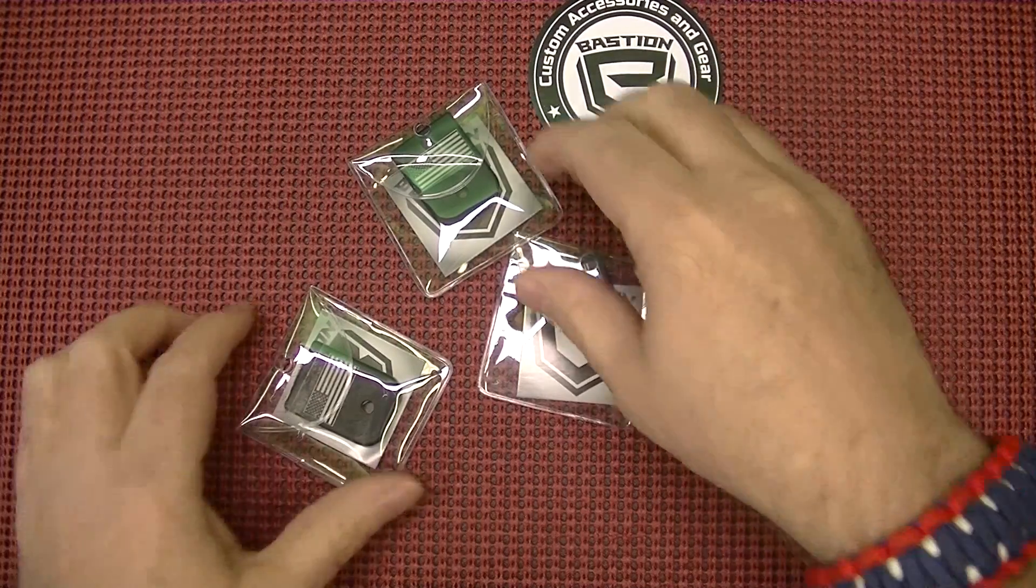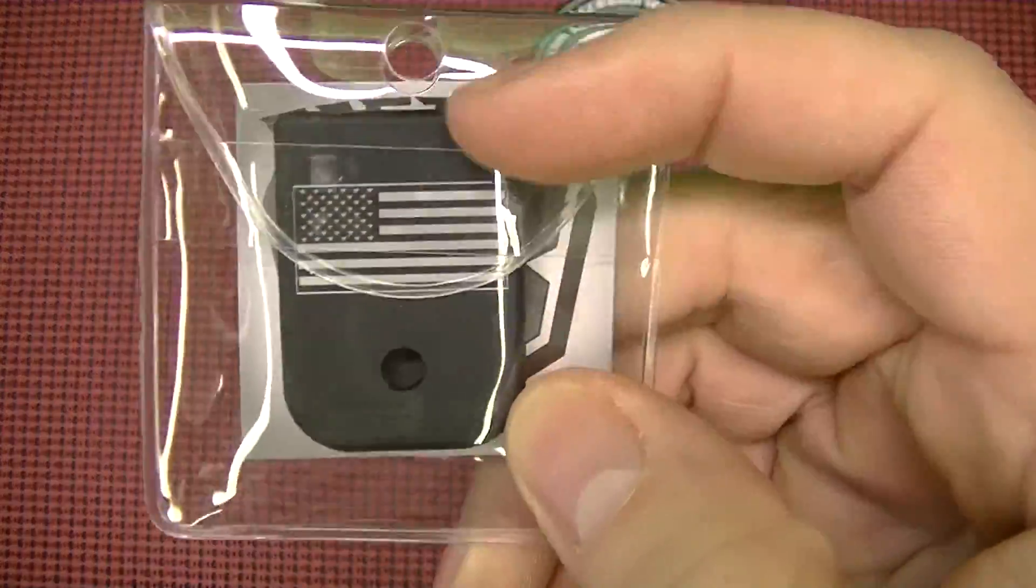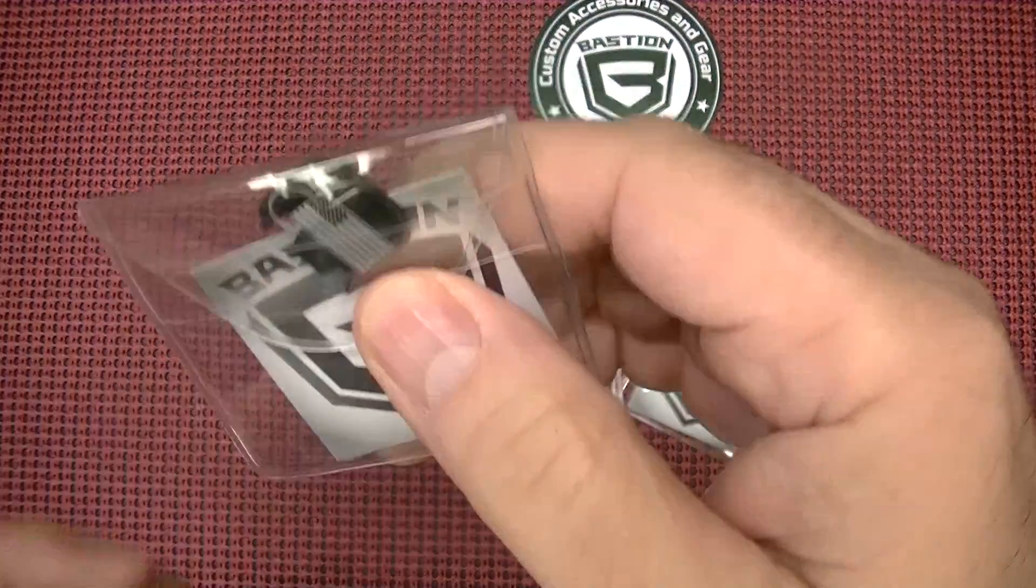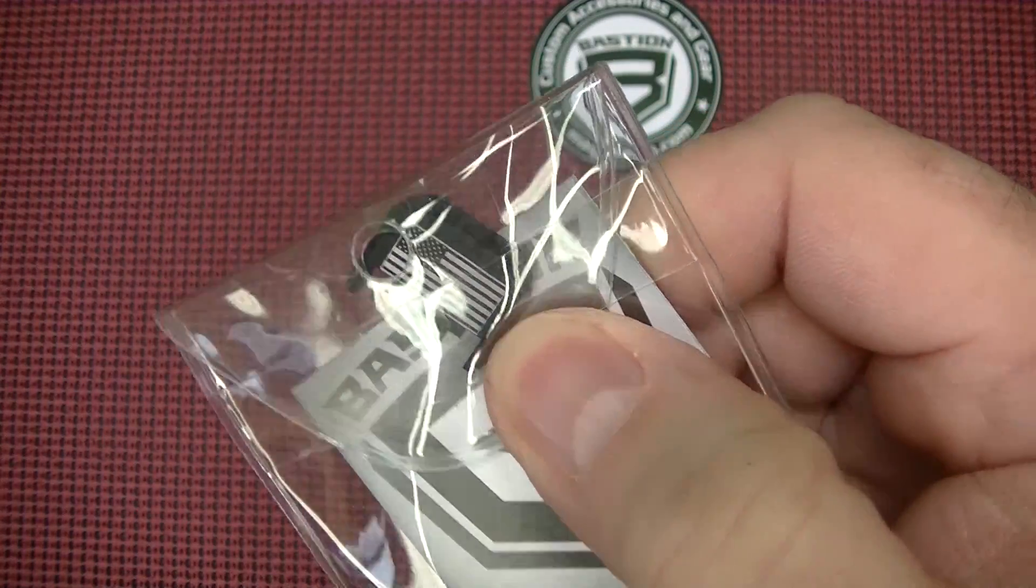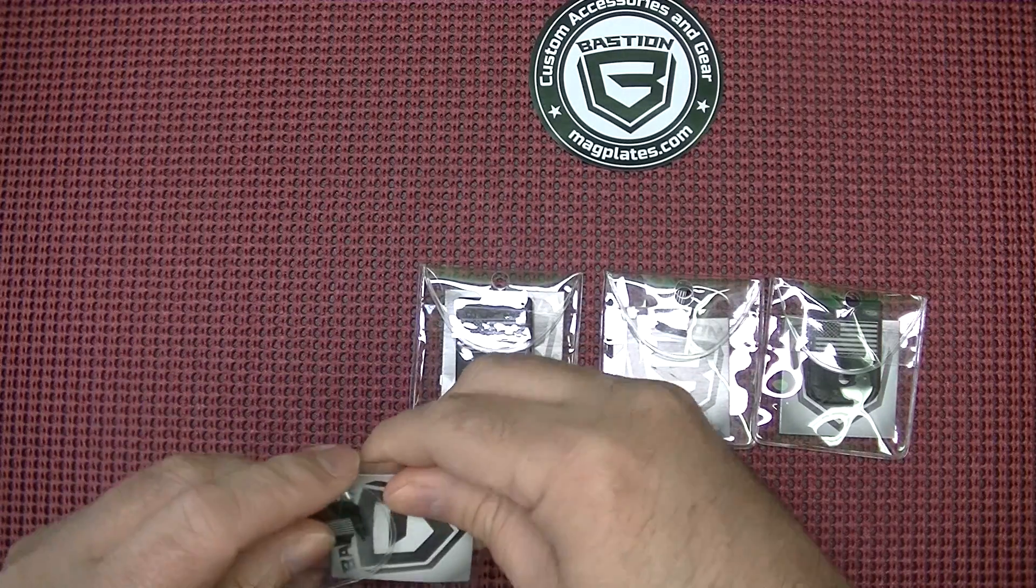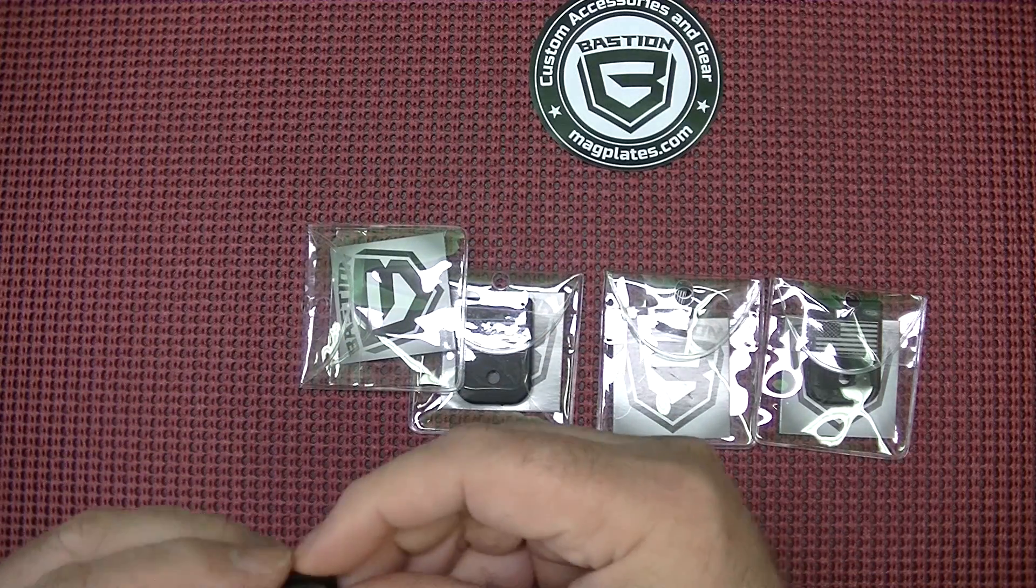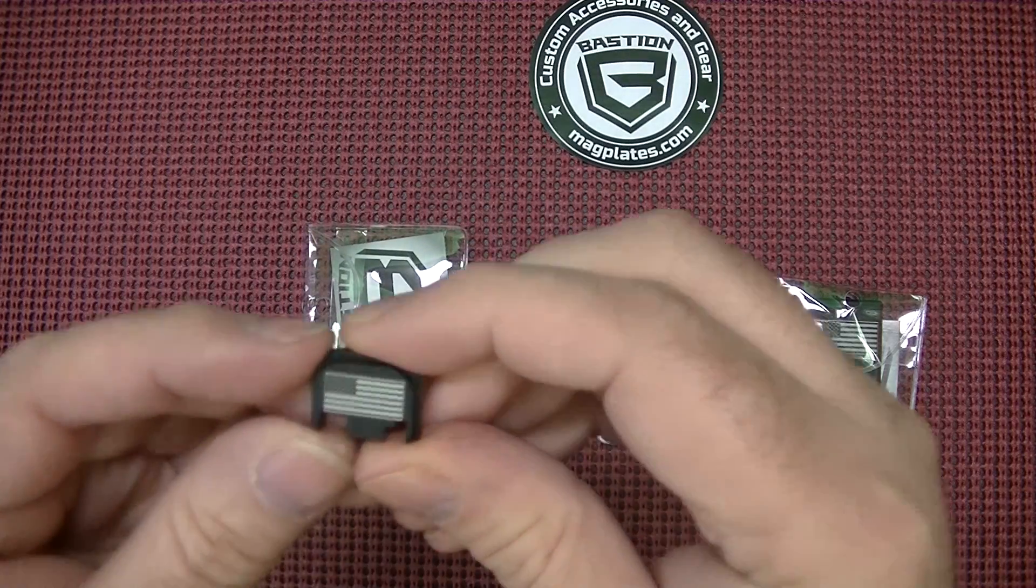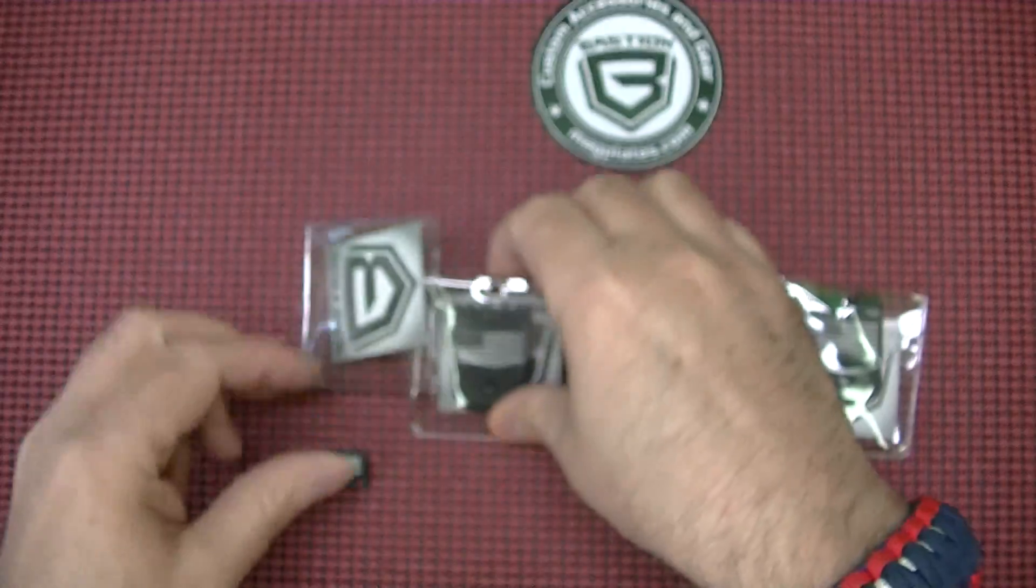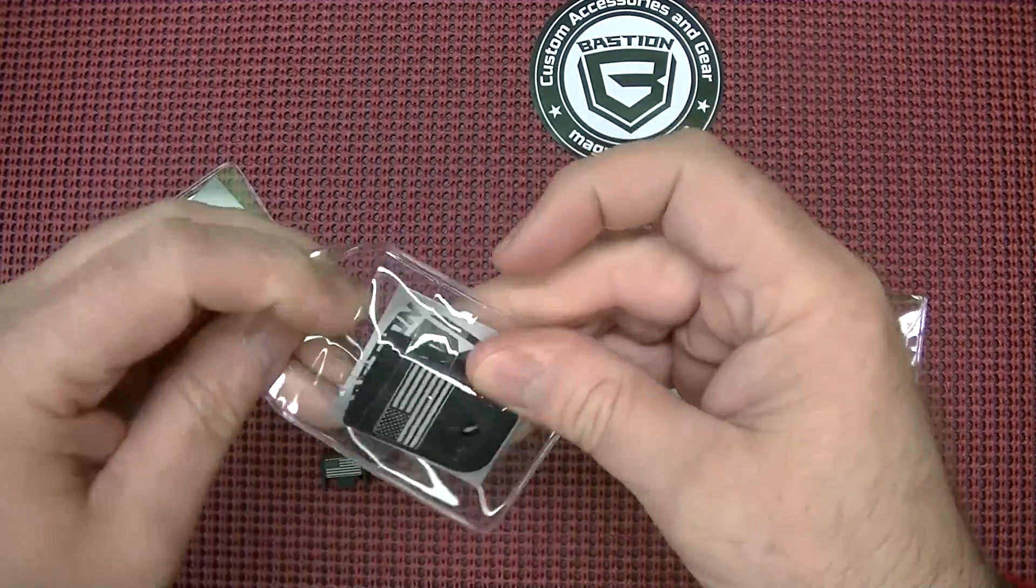Okay, so what we have here is two sets of the magazine bottom plates and the slide end plates. Bastion sent me these, and they seem like they're pretty high quality. And we're actually going to take and install these. But we're going to install a set of these right onto my Glock 19.